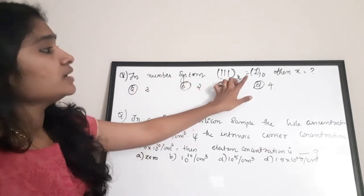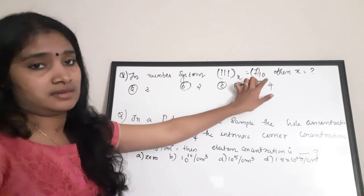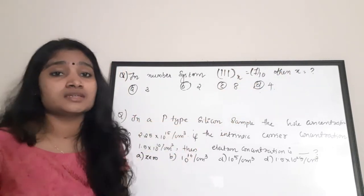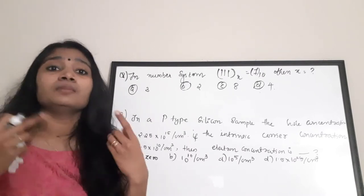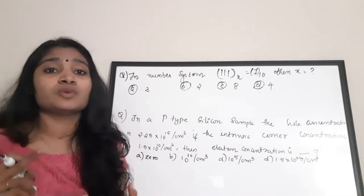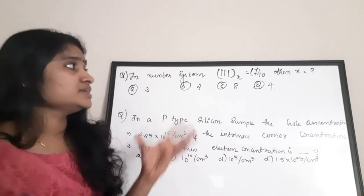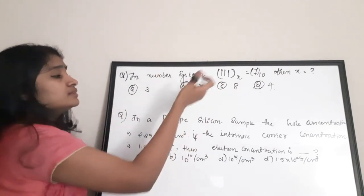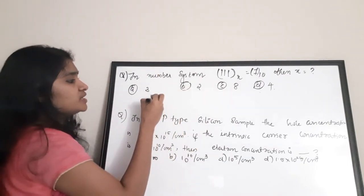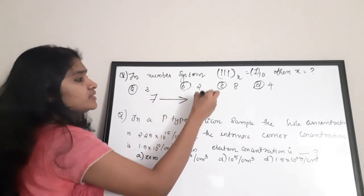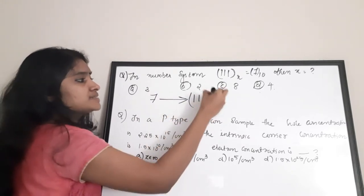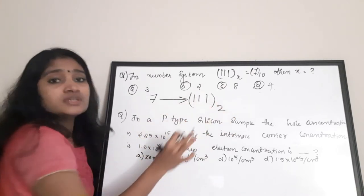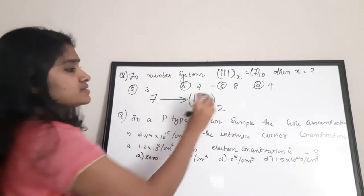The next question: in number system, 111 to base x = 7 to base 10; then x is what? This is a very basic question. If you know the basics of digital electronics number systems — binary, decimal, octal, hexadecimal — you can answer this. The representation of 7 in binary is 111, so binary is base 2, meaning x = 2.